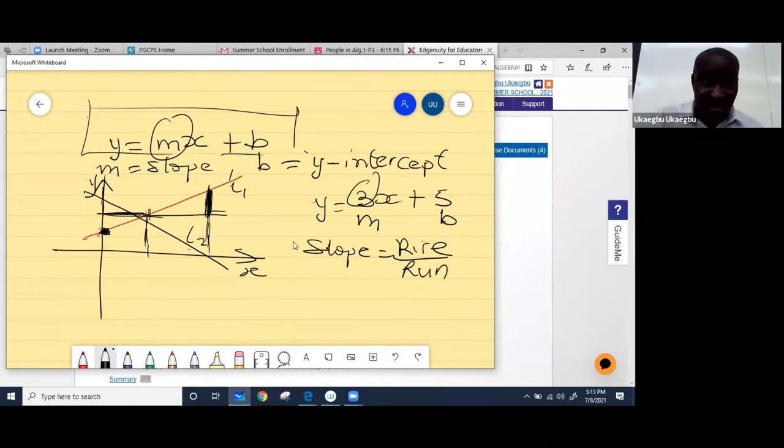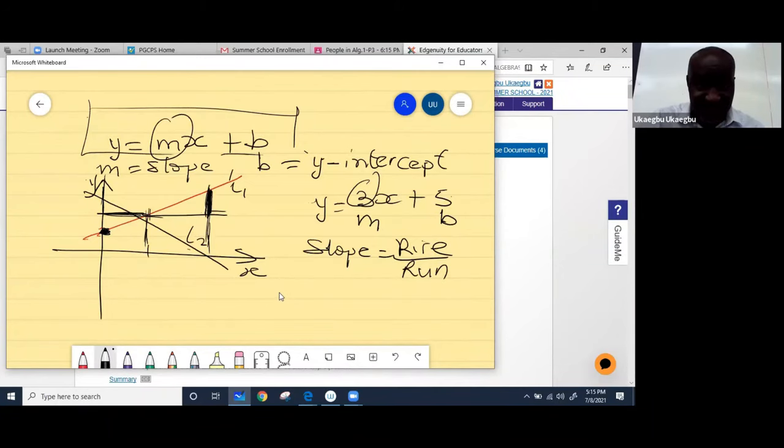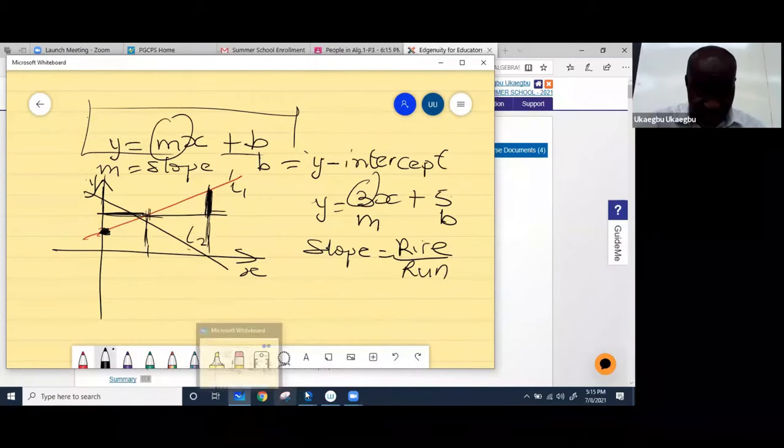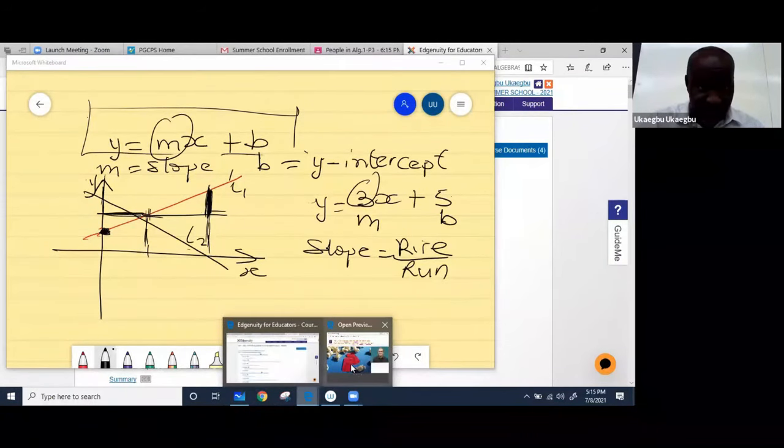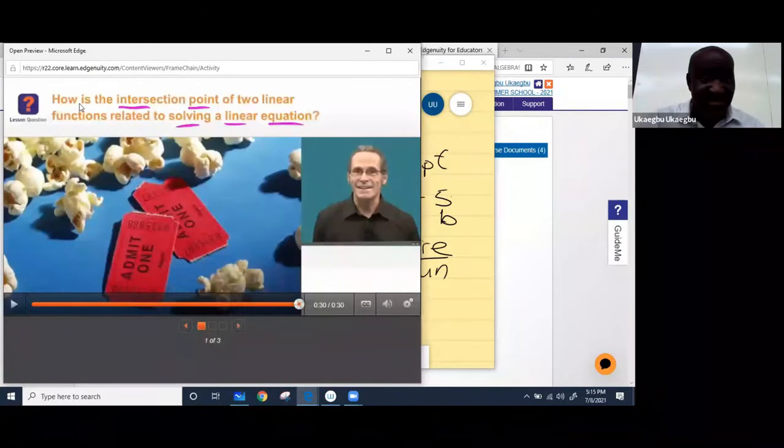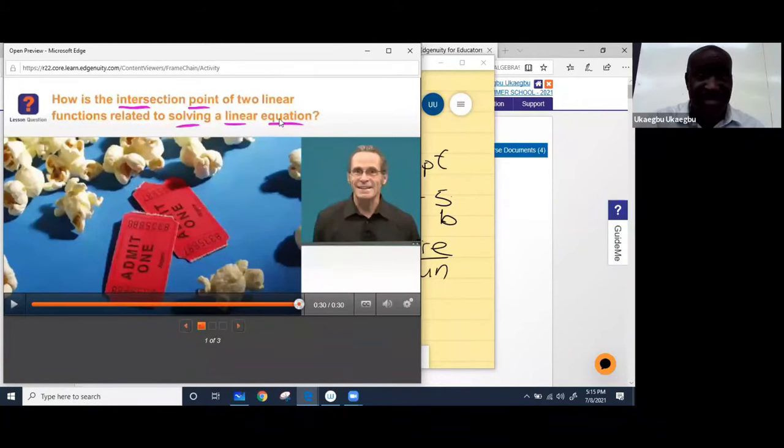So now based on what the gentleman was talking about in that video, he's talking about two equations. Let's get back to that video. He says how is the intersection point of two linear equations related to solving a linear equation. So basically they are talking about giving you two linear equations and their interception, wherever the two lines cross, that's called interception.